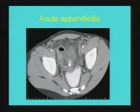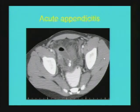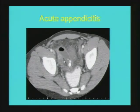Acute appendicitis is obviously the most important condition in the pediatric population presenting with acute right lower quadrant pain, and diagnosis is usually straightforward. The focus should be on detecting complications like perforation and abscess formation, or in negative cases looking for other etiologies. This is a very classical example of a distended air- and fluid-filled appendix with multiple appendicoliths and fat stranding of the surrounding mesentery.